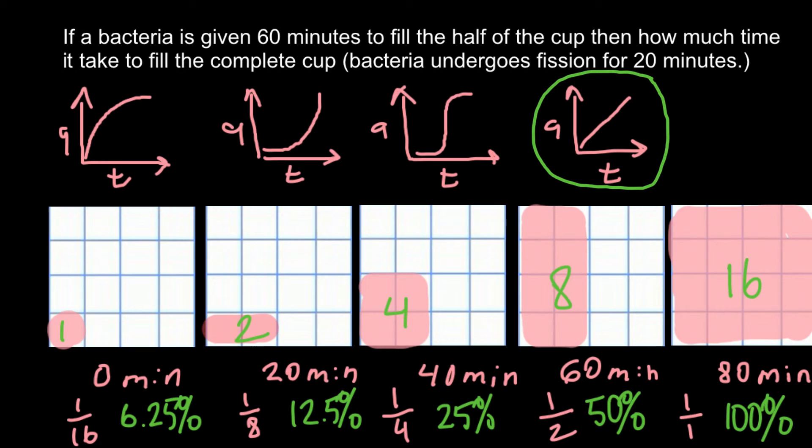This gives us an answer to this problem. Of course, this is an idealized variant when nutrients are not a limiting factor for the growth of the bacteria. But in reality, when bacteria reach large size, bacteria growth usually slows down. But according to our problem today, this is not an issue.